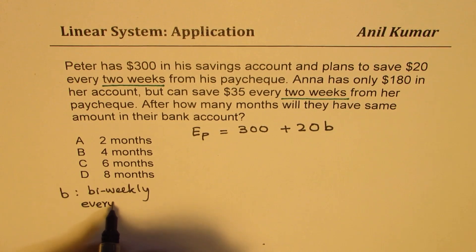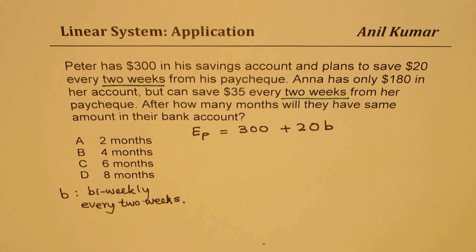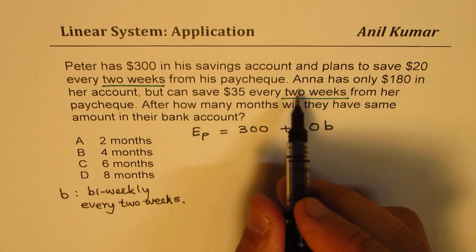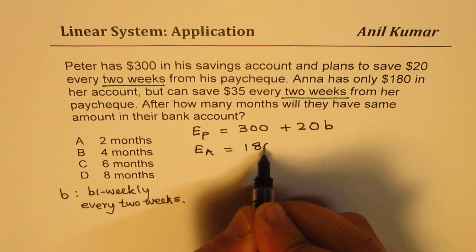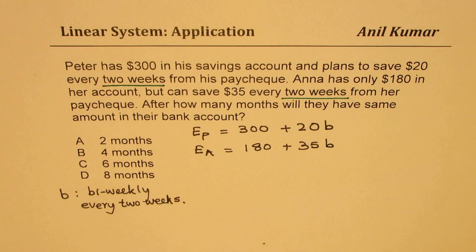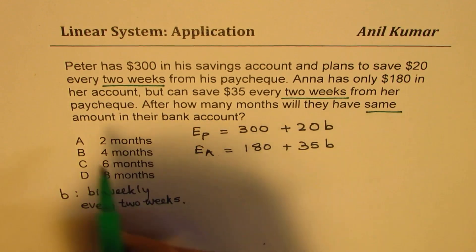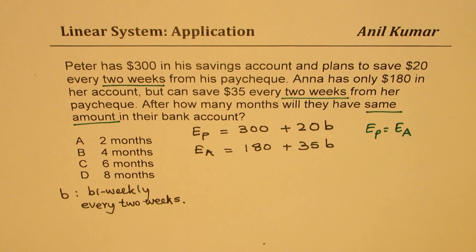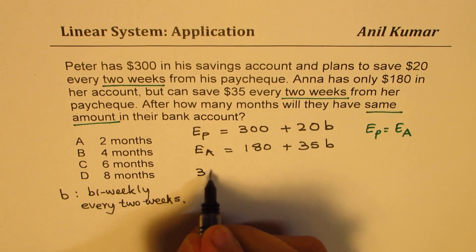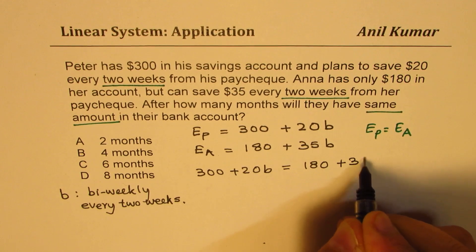That is how I am defining the variable B. As far as Anna is concerned — EA — she has $180 and is ready to save $35 bi-weekly. After how many months will they have the same amount? That means we are looking for EP equal to EA. So we can rewrite this as 300 plus 20B equals 180 plus 35B.